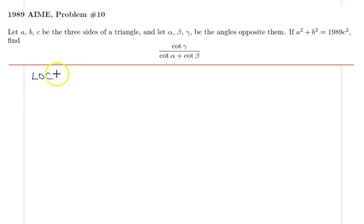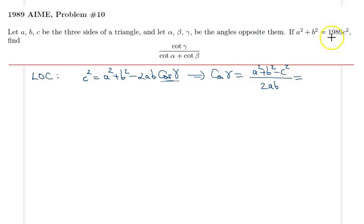Law of cosines: if I apply law of cosines, c² = a² + b² - 2ab·cos(γ). From here, cosine of gamma is (a² + b² - c²)/(2ab). But a² + b² = 1989c², so we get (1989c² - c²)/(2ab) = 1988c²/(2ab).